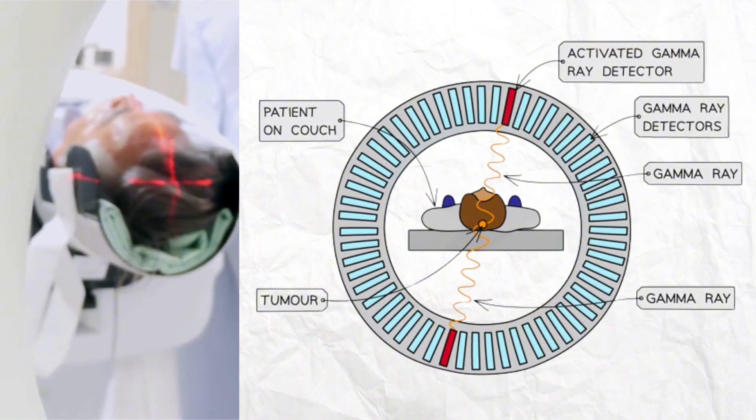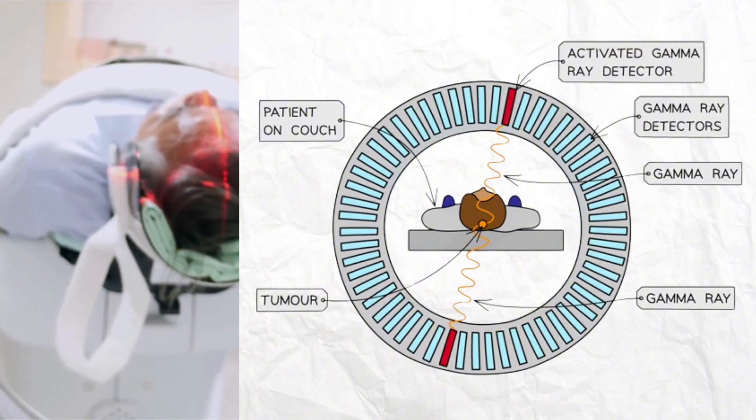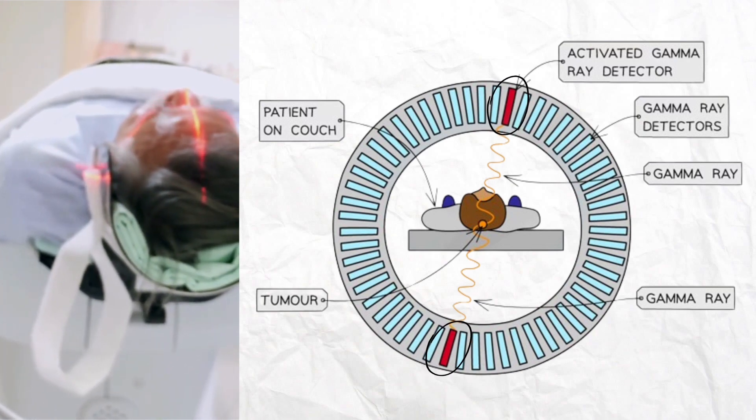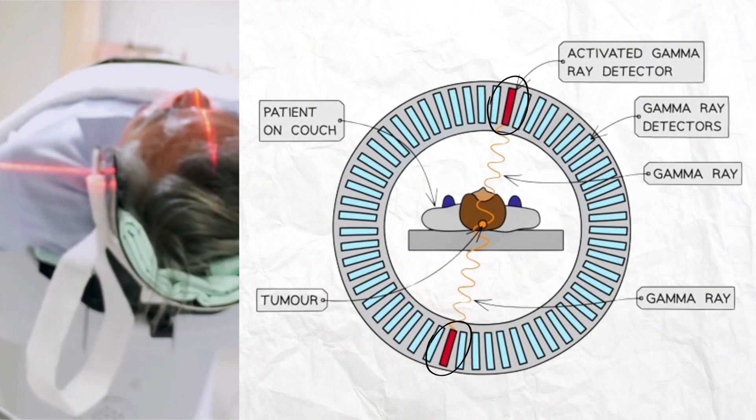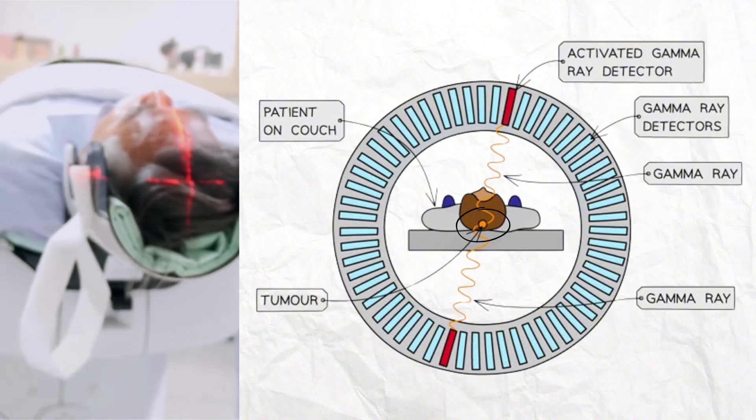The PET scanner comes equipped with a ring of detectors, specifically designed to capture these gamma rays. When two detectors register gamma rays arriving simultaneously from opposite directions, it signifies the location of the annihilation event, pinpointing the precise spot where the radio tracers accumulated in the body.